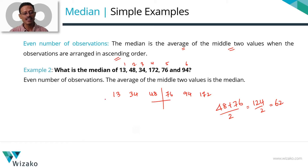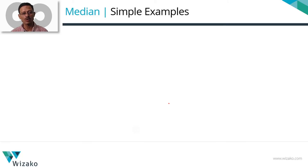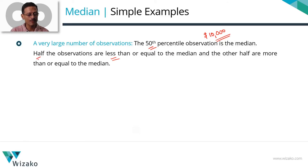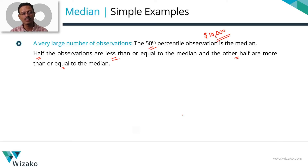If you have an even number of observations, none of the numbers in the set will necessarily equal the median. Now, what if we have a large data set — like the population of a country? In that case, the 50th percentile value gives you the median. For example, if the median income of a household in a country is $10,000, it means that half the population earns less than or equal to $10,000, and the other half earns $10,000 or more. So for a large population set, the median essentially gives you the 50th percentile value.